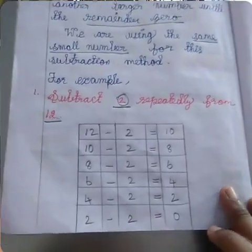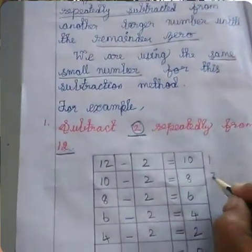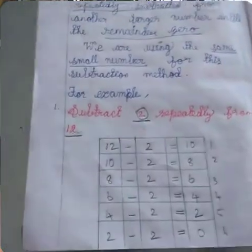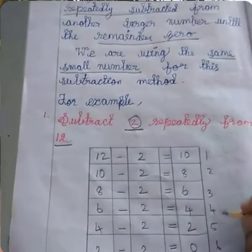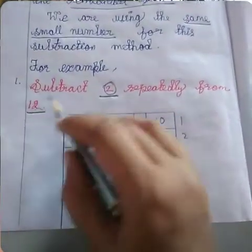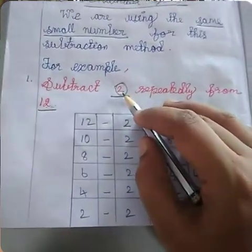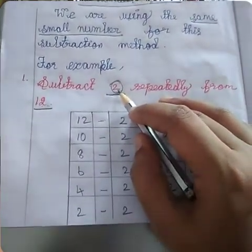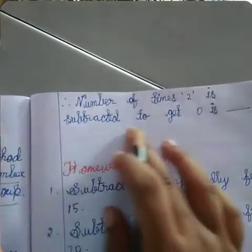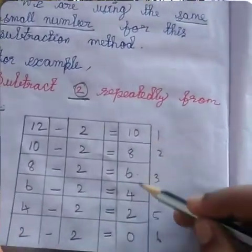How many boxes are there? First count: 1, 2, 3, 4, 5, 6. How many boxes? We are getting 0 in 6 boxes. So what is the answer? 6 boxes. We are subtracting 2 repeatedly from 12 and we are getting 6 steps. The number of times 2 is subtracted to get 0 — how many times? 1, 2, 3, 4, 5, 6 — 6 times. The answer is 6.